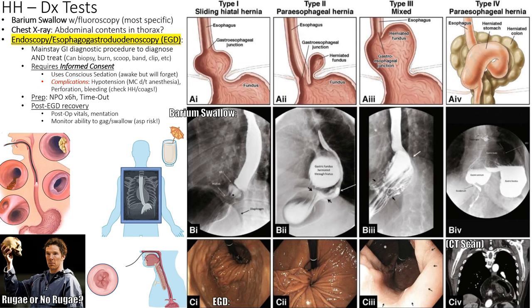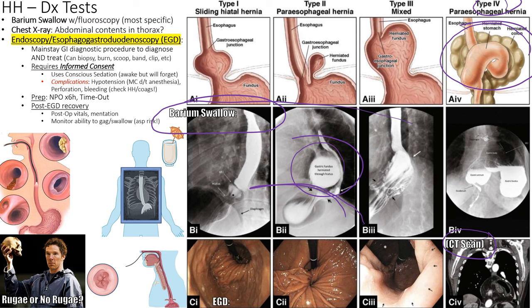Diagnostic tests for hiatal hernia include barium swallow — the patient swallows a liquid contrast, an X-ray is taken, and you can see the stomach lit up above the diaphragm. Stages one through four indicate severity, with stage four having everything above the diaphragm. A CT scan can also be used for more detail before surgery. EGD is both diagnostic and interventional.